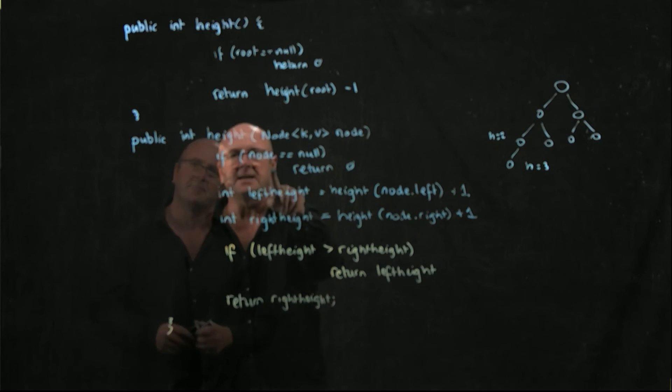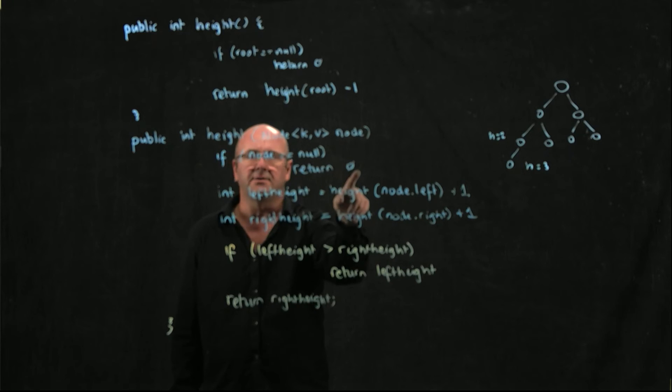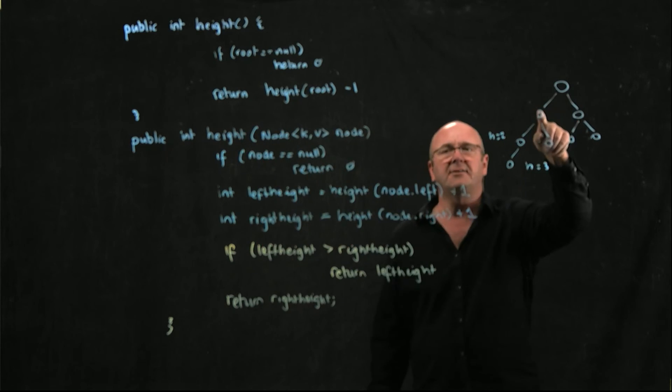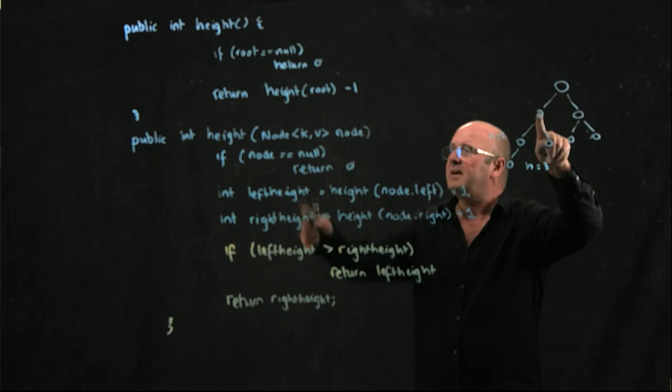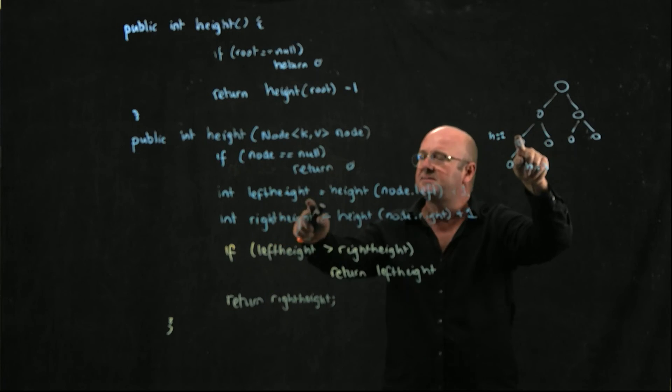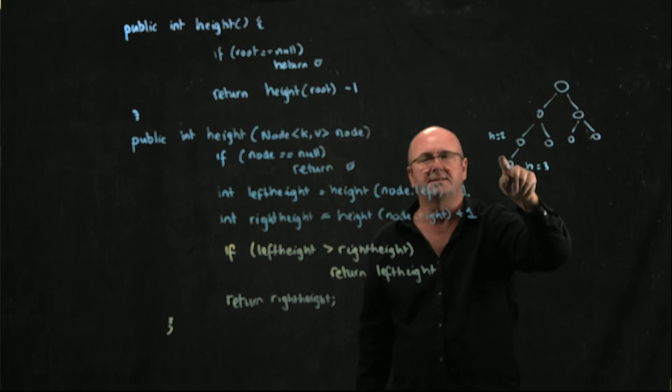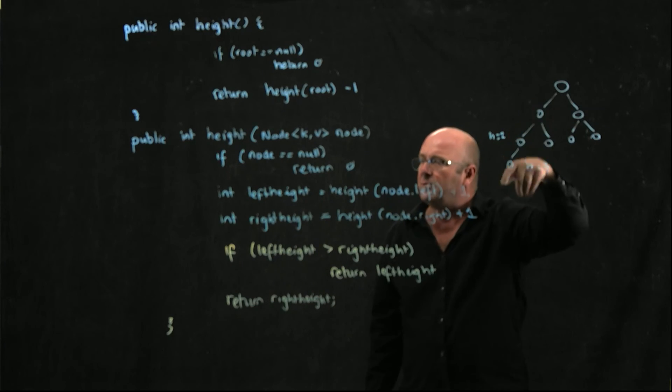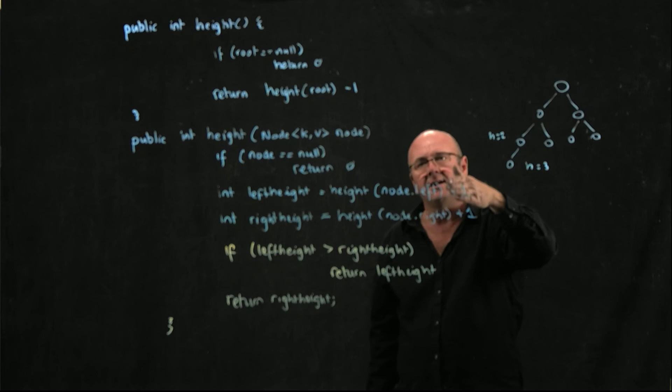If I get to a node that's null, I don't have any height, otherwise I say what's the height of my left. The height of my left says I don't know. What's the height of my left? The height of my left says I don't know. What's the height of my left? That says I don't know.